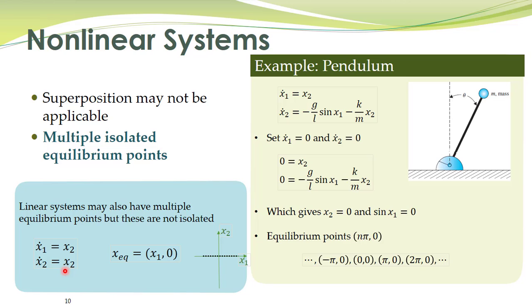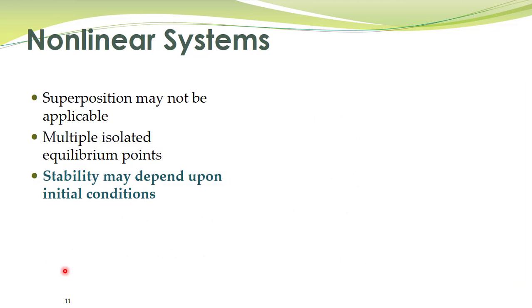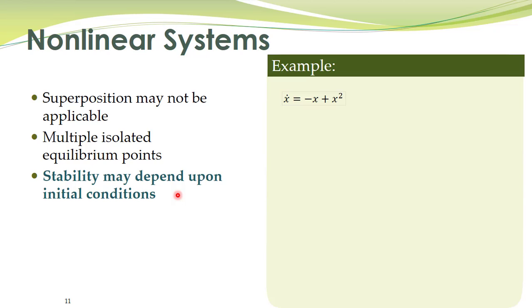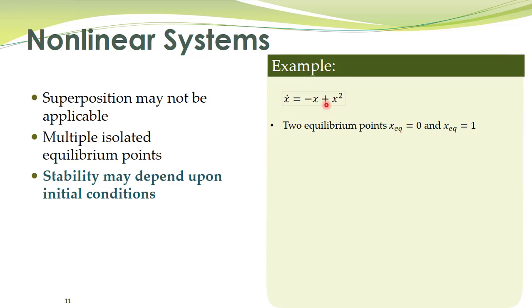For linear systems, stability does not depend upon initial conditions, whereas for nonlinear systems stability may depend upon initial conditions. Here is an example: a first-order nonlinear differential equation where the x-squared term adds nonlinearity. We find two equilibrium points by setting the derivative to zero: one at the origin x equal to zero, and a second at x equal to one, solving minus x plus x-squared equals zero.